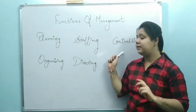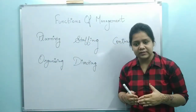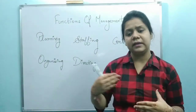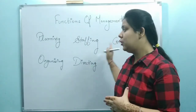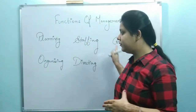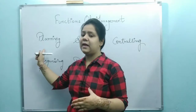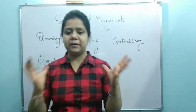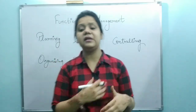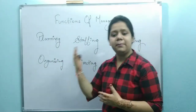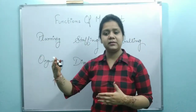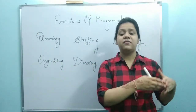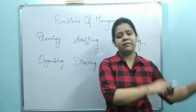So where deviations are found, we identify how to overcome them and what corrective actions to take, then we do planning again. Basically, this is a circular motion — functions keep running in management. First we plan, then we organize, then staffing, directing, controlling, and then the results feed back into planning.